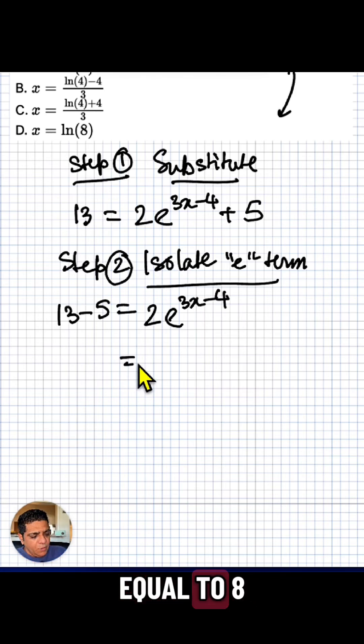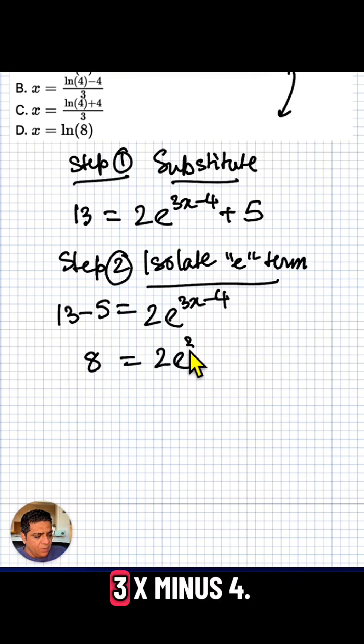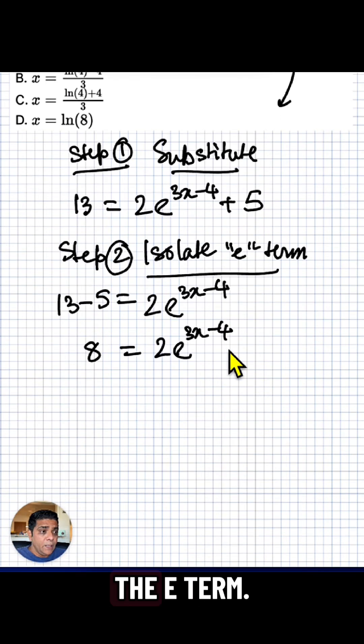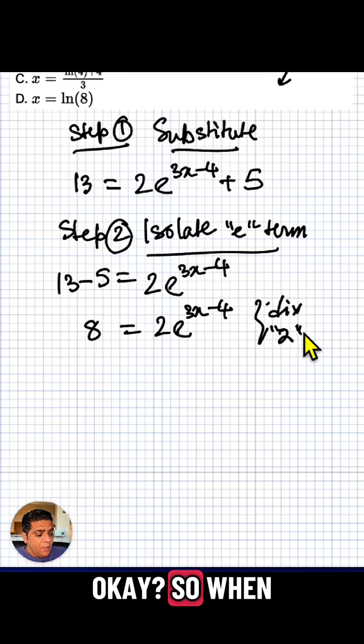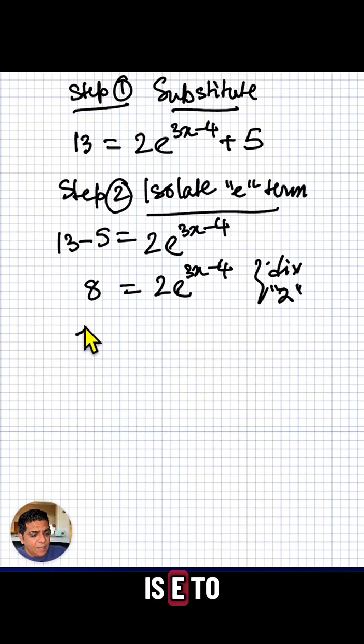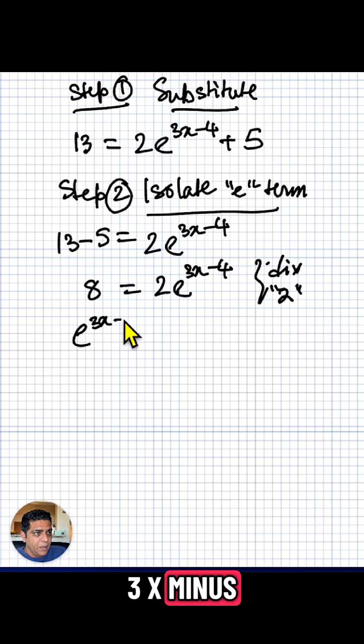We keep isolating the e term. Divide both sides by 2. So when that happens, what we have is e to the power of 3x minus 4 equals 8 divided by 2 is 4.